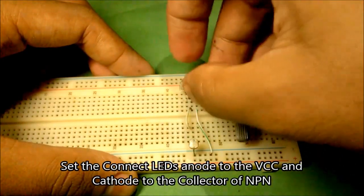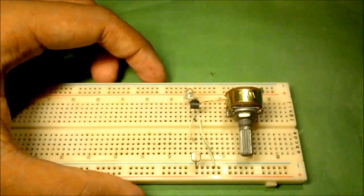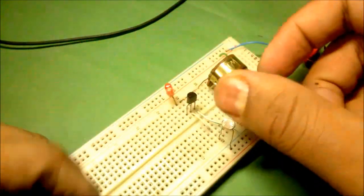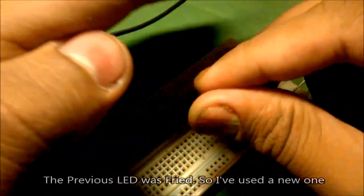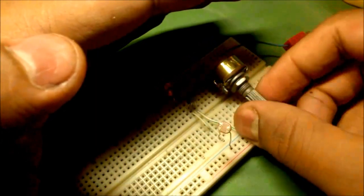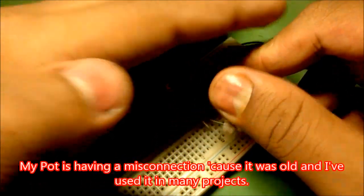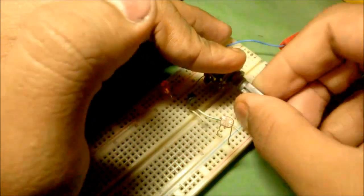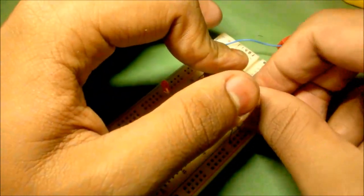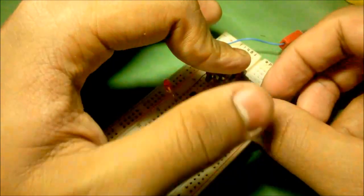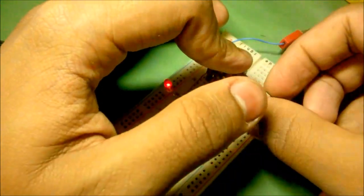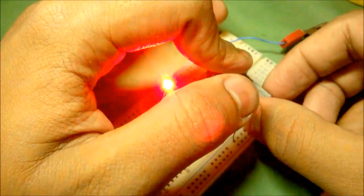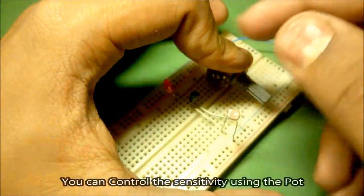Now mount the LED. I have connected this project to a 3V power supply. My pot is having a misconnection because it was old and I have used it in many projects, but it still works. You can control the sensitivity using the potentiometer. Thank you.